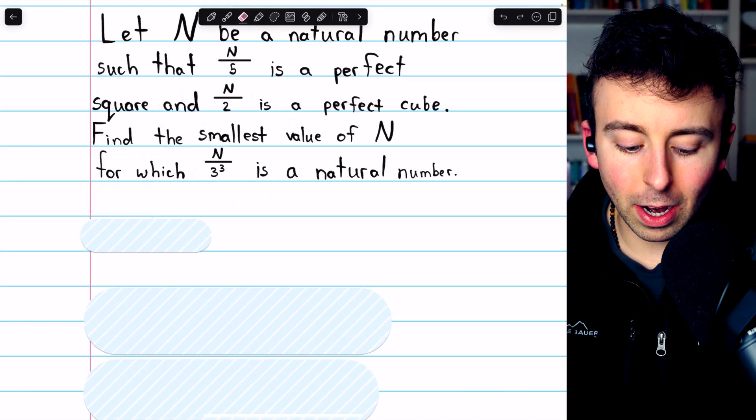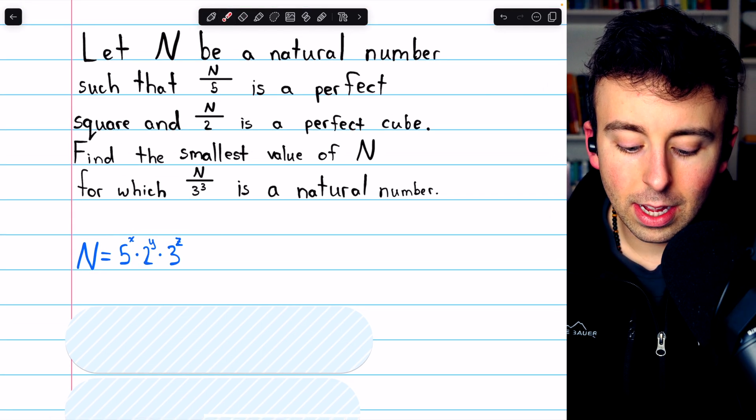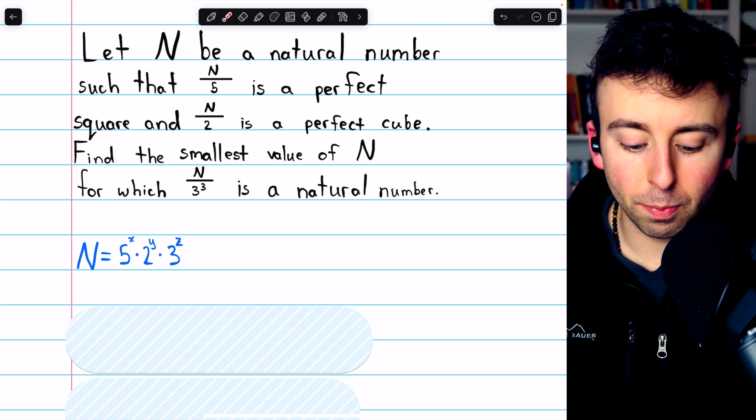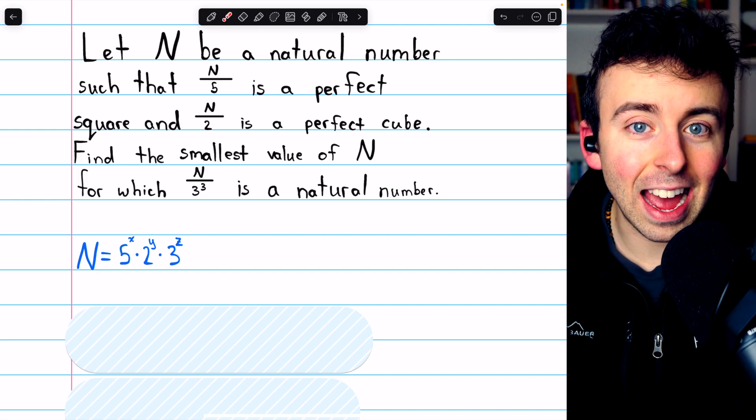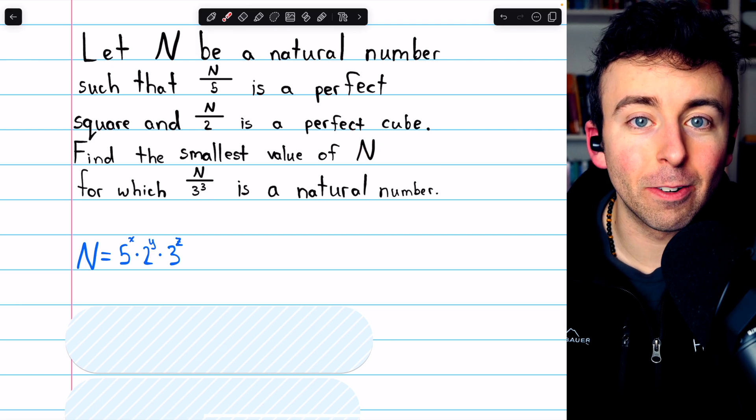This means that we can write N like this. It can be factored into 5 to something times 2 to something times 3 to something. Certainly, we're not going to include any other factors because these are the only ones it has to have, and we're trying to find an N as small as possible that fits this criteria.